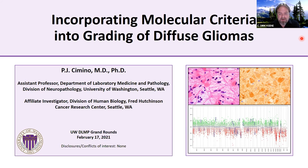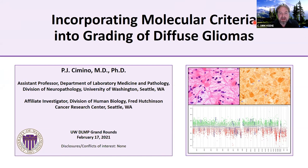Thank you, Larry. Welcome, everyone. It's my pleasure to introduce Dr. Cimino, who has been with us for quite some time, with a little interruption here and there. PJ got his undergraduate degree at UW, graduating magna cum laude. He stayed here in the MSTP training program and did some amazing things. He did his PhD with Tom Monteen in pathology and then went off to St. Louis, where he did his AP residency and NP fellowship, also participating in additional research training with Dr. Gutman.